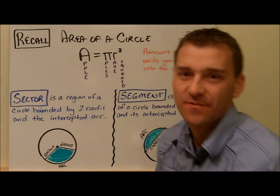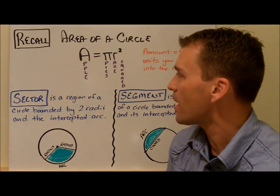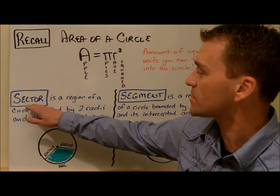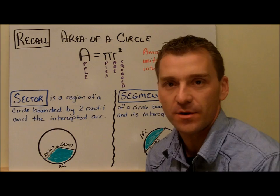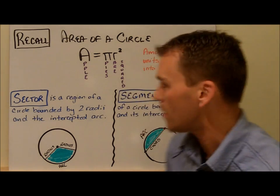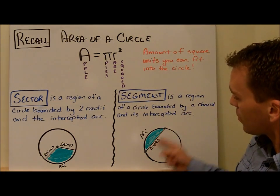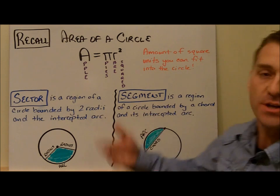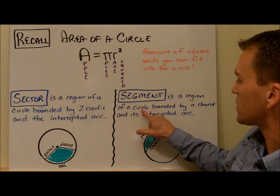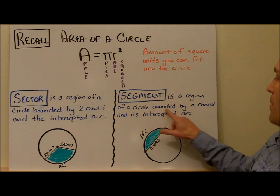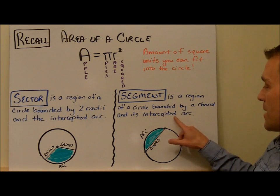The second part of this video is about how to find the area of a segment. Remember, I told you this is the segment — it's like the chord, it cuts off the arc. The definition is a region of a circle bounded by a chord and its intercepted arc.